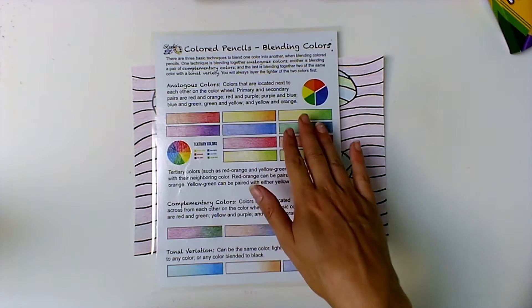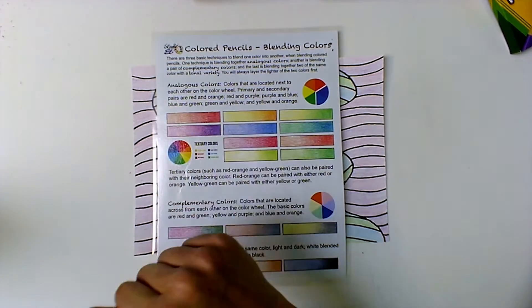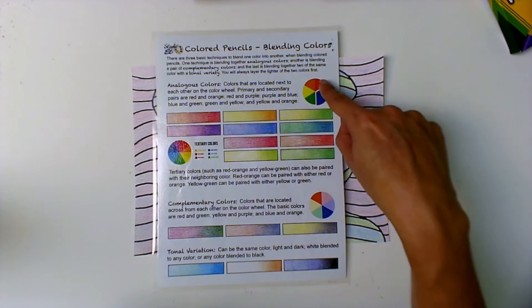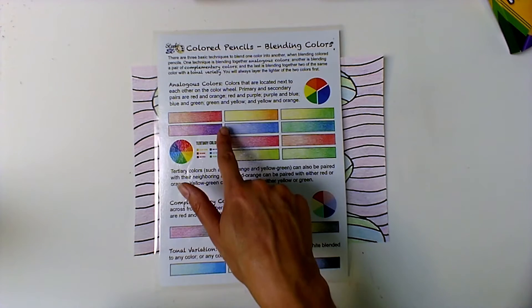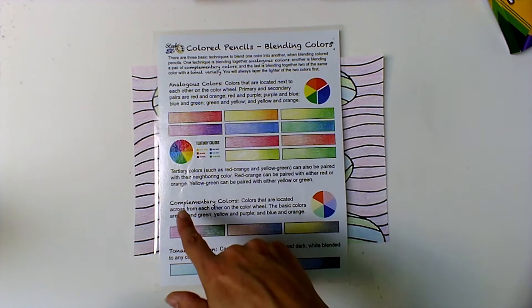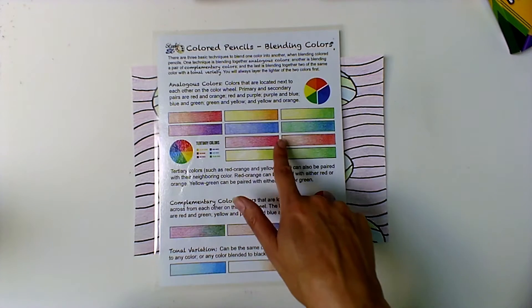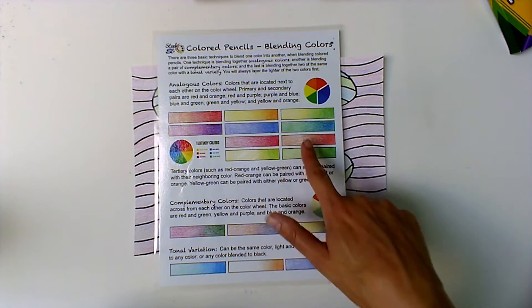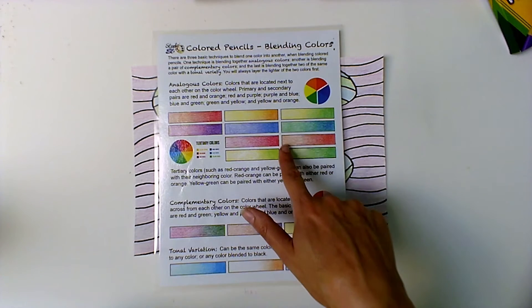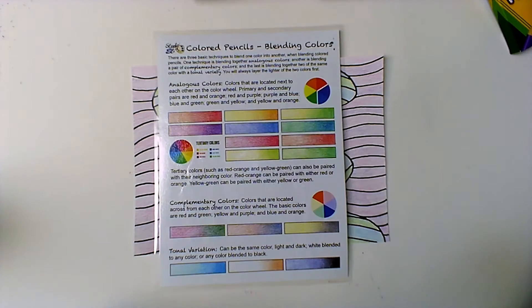This one has analogous colors blending together. So you have the orange going into the red, the red going into purple. That's what's next to each other on the color wheels. Yellow into orange, that looks like purple into blue. This one is the red orange into orange, yellow into yellow green, yellow into regular green, green into blue. This is orange into red orange, and this is the yellow green into green.